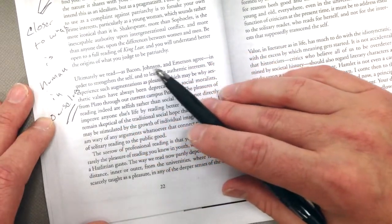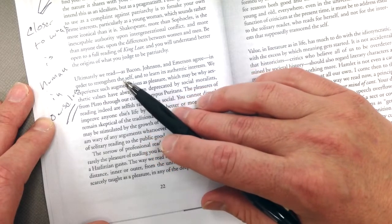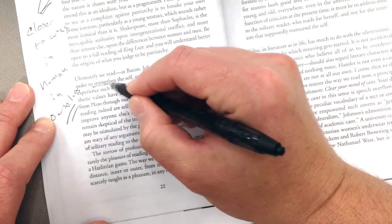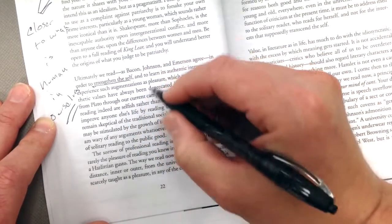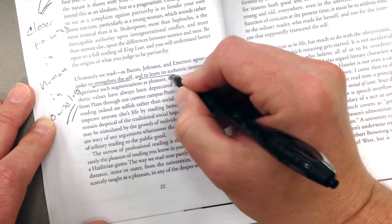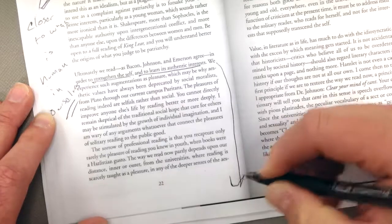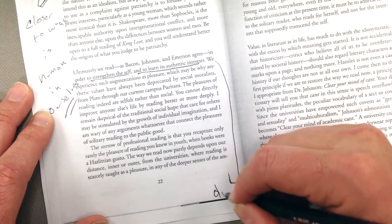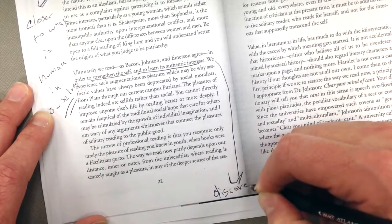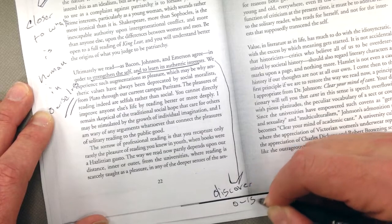Let's see. Ultimately, we read, as Bacon and Emerson agree, in order to strengthen the self. Strengthen the self. And to learn its authentic interests. So we read, to know ourselves. I'm going to put discover. To discover ourselves.